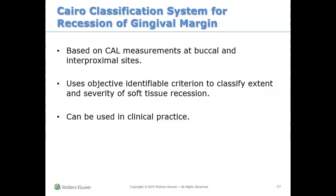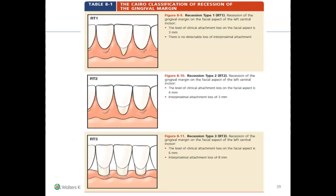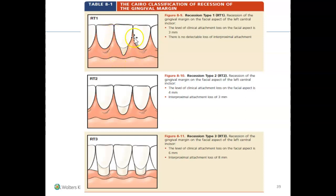We now use the Cairo classification of recession rather than the older Miller classification. Using the Cairo classification: RT1, recession type 1, means the patient has recession on the facial aspect with attachment loss of about three millimeters, but they do not have any interproximal attachment loss or bone loss in the interproximal regions between the teeth.